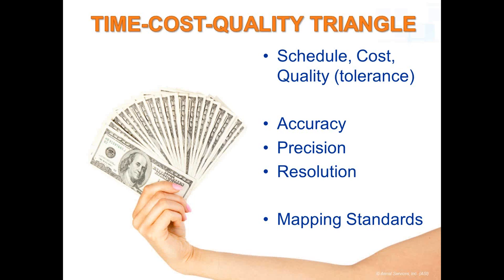All of these factors — accuracy, precision, and resolution — have an effect on cost and schedule. There are many other project-specific variables not discussed today, such as whether you can access the area and how much ground control you need. Those variables can affect price and schedule. If you're not familiar with different standards, you can follow a variety of mapping standards that outline conformance criteria such as accuracy, labeling, and quality assurance practices. It's important to discuss these with the consultant and ensure the standard you choose is appropriate to your intended use.